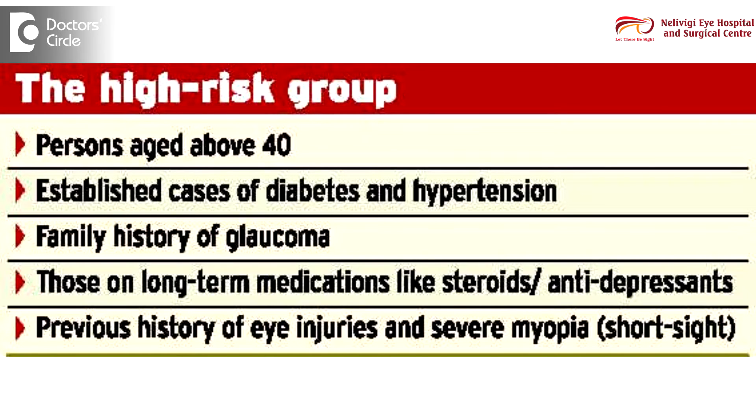We can have glaucoma caused by various medications or by various diseases in the eye. Especially, conditions like uveitis, which is an inflammatory condition of the eye, can cause glaucoma. So we can classify glaucoma based on type — like open angle and closed angle — or based on causation, such as traumatic glaucoma or cataract-induced glaucoma.